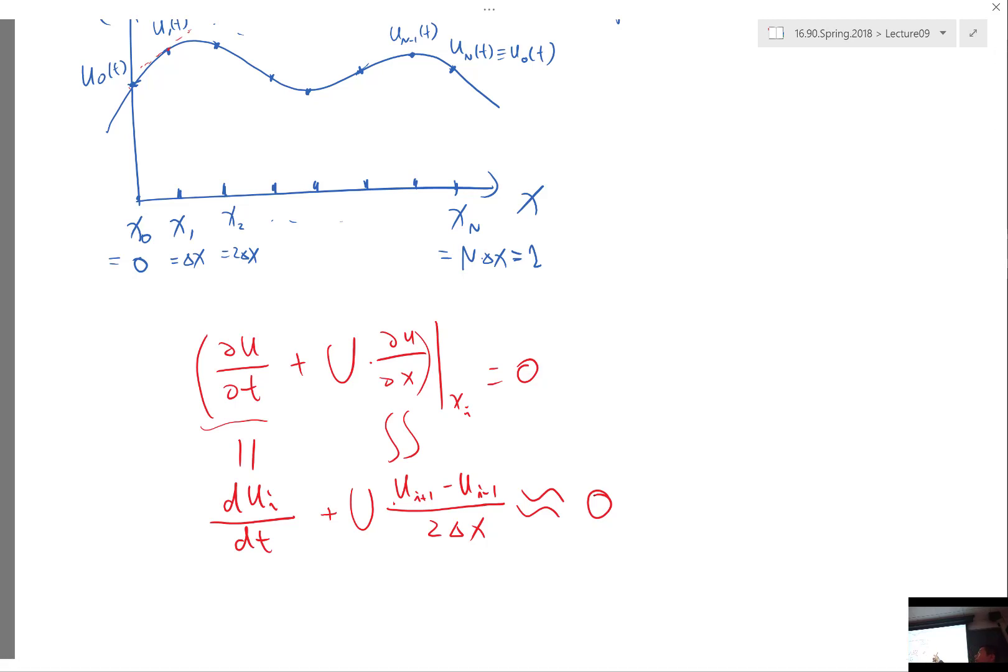All right, so we can do this for r equal to 1, r equal to 2, etc., all the way to r equal to n minus 1, right? So we get n minus 1 equations.